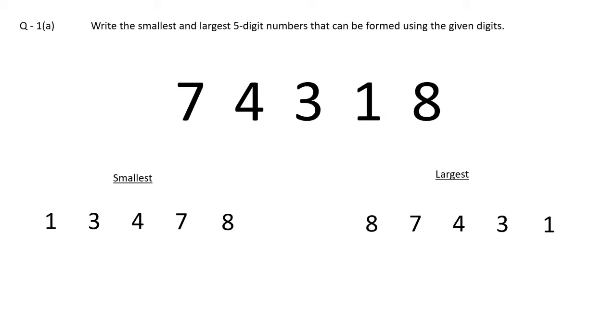I hope the concept is clear now. Let's do the next part — question number 1, part B. The digits given are 5, 0, 2, 8, and 3. Let's apply the same concept: we have to make the greatest and smallest five-digit number.